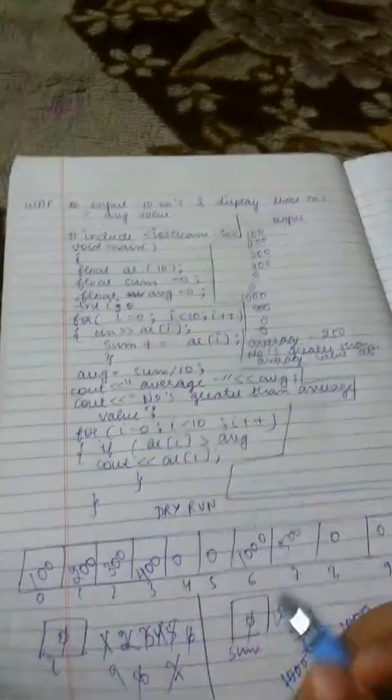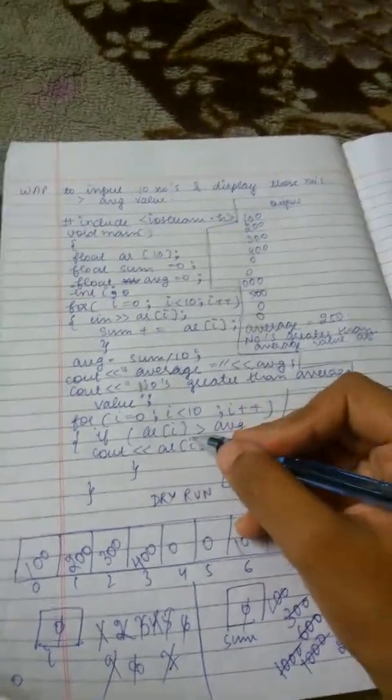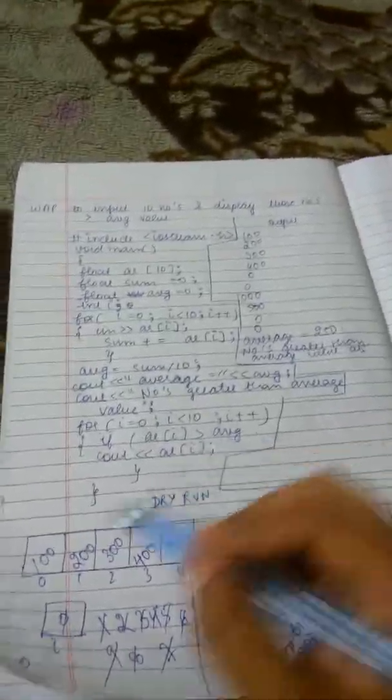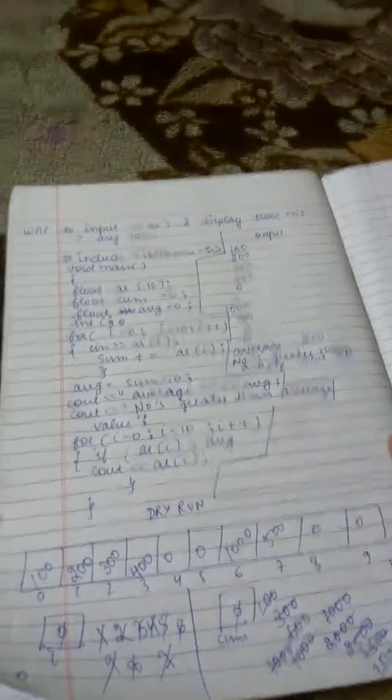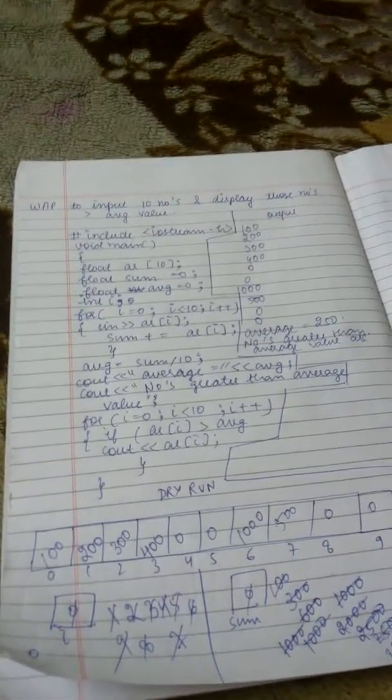Again i is becoming 0. 0 is less than 10? Yes. Will come down. ar[0] is greater than average. Is 100 greater than 250? No. The number will not get displayed.